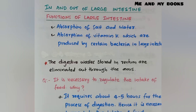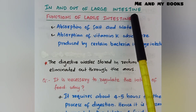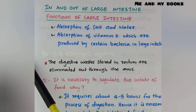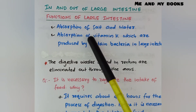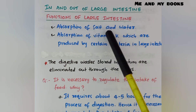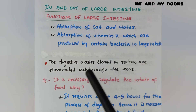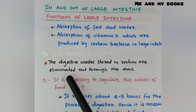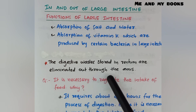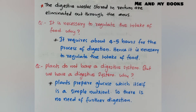The large intestine absorbs salts and water and also absorbs vitamin K, which is produced by certain bacteria in the large intestine. Digestive wastes stored in the rectum are eliminated out through the anus.